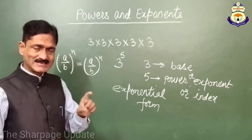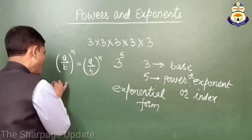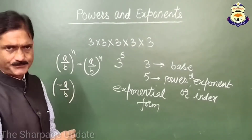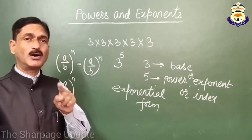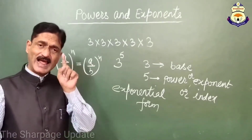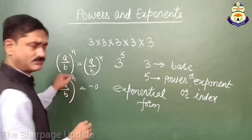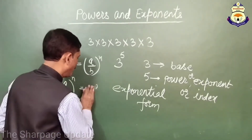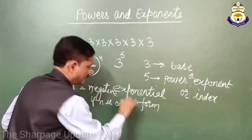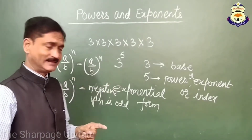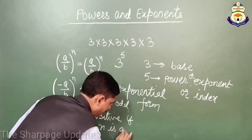Here, if a/b is a positive rational number and n is an integer, then (a/b)^n is always positive. And if a/b is a negative rational number and n is an integer, then the value of (-a/b)^n depends upon the value of n. If n is an odd number, the value will be negative. If n is an even number, the value will always be positive.